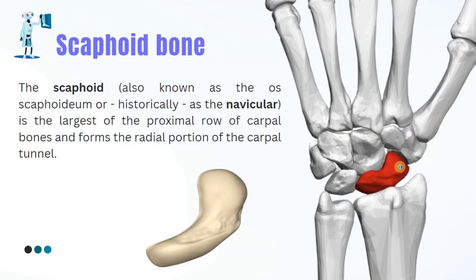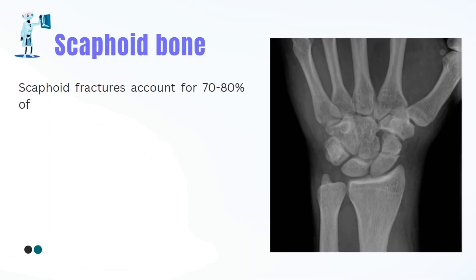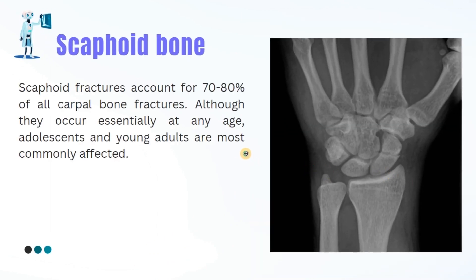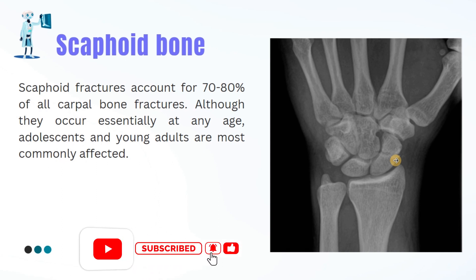The scaphoid is pretty important for the stability and movement of our wrist. It's actually the biggest bone in the proximal row of carpal bones, and it plays a crucial role in forming the radial portion of the carpal tunnel — the tunnel through which nerves and tendons pass in our wrist. Around 70 to 80% of all carpal bone fractures are scaphoid fractures. While they can happen at any age, they tend to affect adolescents and young adults the most.